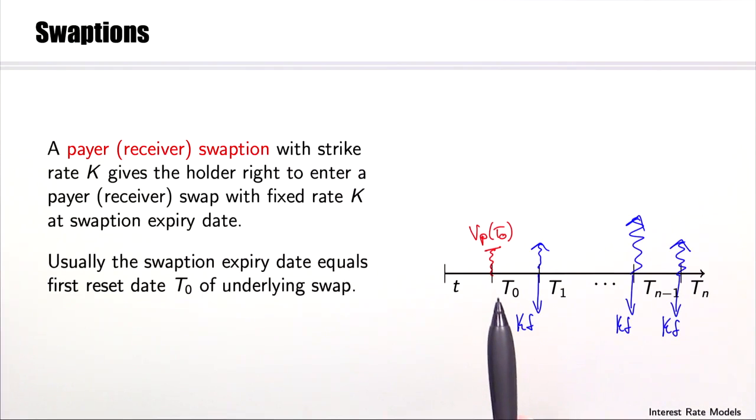Let's assume T0 is here and the swap has a length of TN minus T0. It pays a fixed rate K at cash flow dates and receives floating at the same dates.